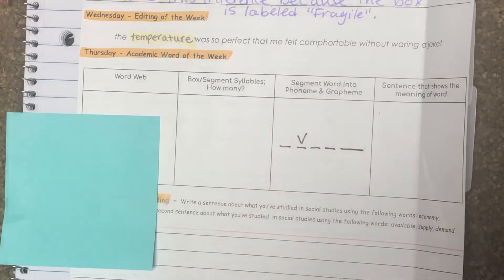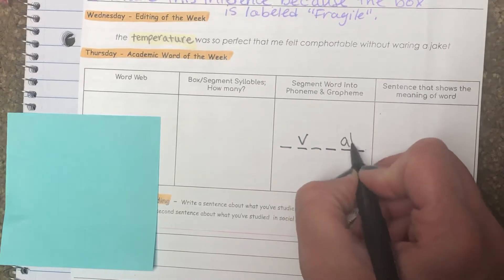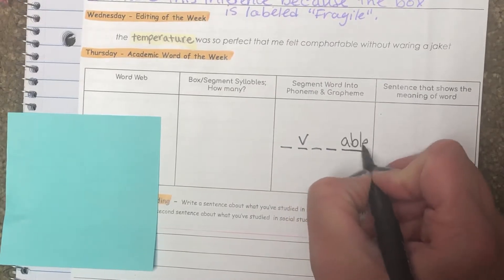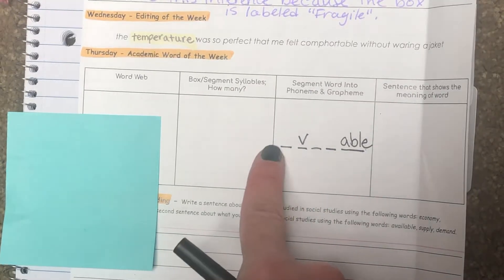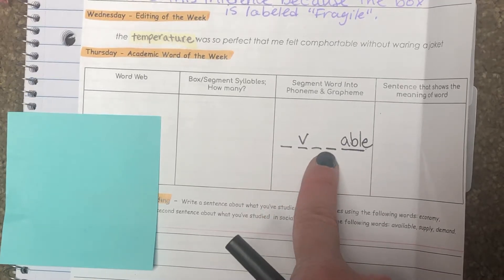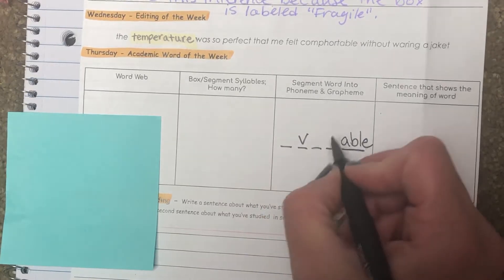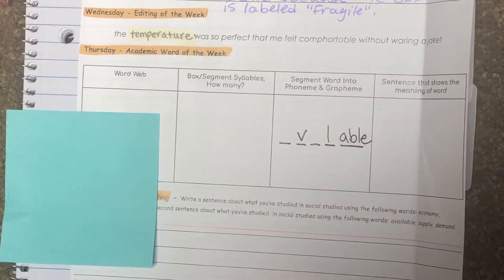I know for sure that's a V. And then I know for sure I'm working with the suffix -able because I told you that, right? V... al... al. I do know an L is going to be there.